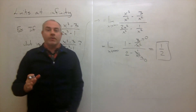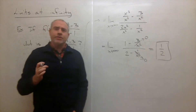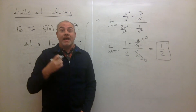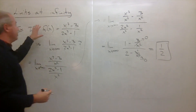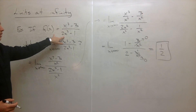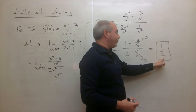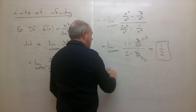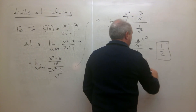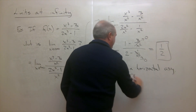So if you're in a situation where you'd like to plug in infinity, that usually doesn't work. But what you can do is divide the top and the bottom of that fraction by the highest power of x, and that does work. Going back to the original question: what is a horizontal asymptote of this function? We just found that the limit as x goes to infinity of that function is one half, so y equals one half is a horizontal asymptote of this function f of x.